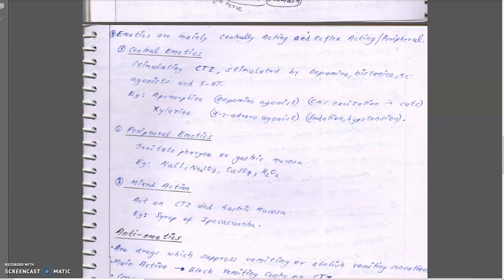Now we deal with emetic drugs. In poisoning, we give emetics. Emetics are mainly centrally acting or reflex acting. Central emetics stimulate the chemoreceptor trigger zone via dopamine, histamine, alpha-2 agonists, and 5-HT. Apomorphine is a dopamine agonist given as a central emetic; CNS excitation in cats is a side effect. Xylazine is an alpha-2 adrenoceptor agonist that can also cause sedation and hypotension.